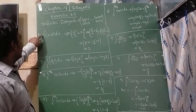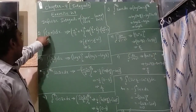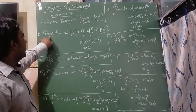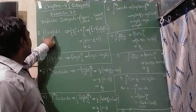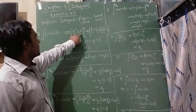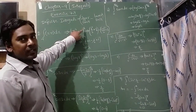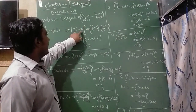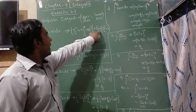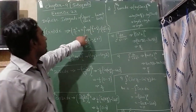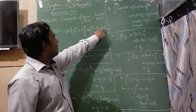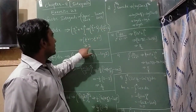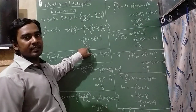The first question is integration of minus 1 to 1 of (x + 1) dx. Integration of x is x²/2, and integration of 1 is x. Applying the upper limit 1: we get 1²/2 + 1. Minus the lower limit −1: we get (−1)²/2 + (−1), and plus and minus gives minus. Solving this, you get the answer as 2.